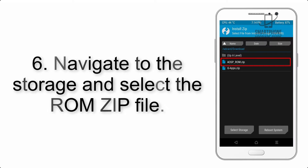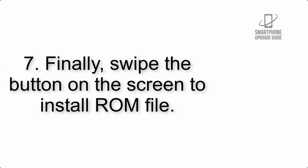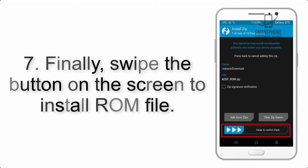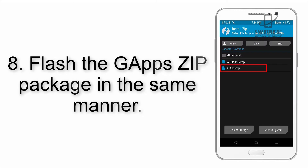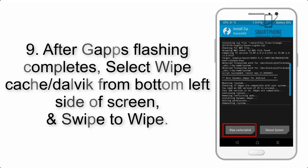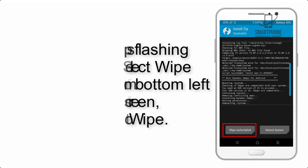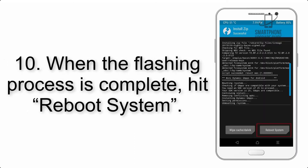Step 6: Navigate to the storage and select the ROM zip file. Step 7: Swipe the button on the screen to install the ROM file. Step 8: Flash the GApps zip package in the same manner. Step 9: After GApps flashing completes, select Wipe Cache and Dalvik from the bottom left side of the screen and swipe to wipe.